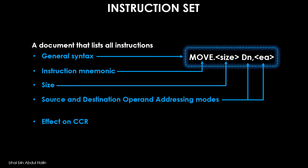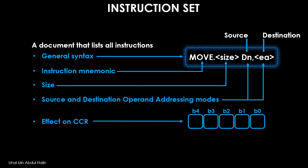You should always remember that in any instruction that has a source and destination, the source is written before the destination. The job of the programmer is to know what size is to be used, and also what to write in place of Dn and EA. Finally, the instruction set also tells us how the user byte of the status register — also known as the condition code register — is affected after execution. The flags labeled X, N, Z, V, and C will each be either a one or a zero according to the instruction executed. Note that this is just one example of how the MOVE command can be written; it can be written in many more ways because the addressing modes for source and destination can be of many types, and all of them are given in the instruction set.